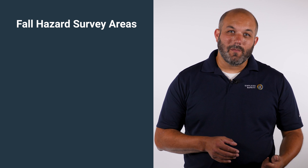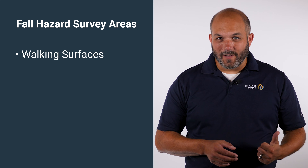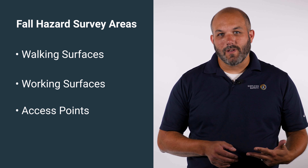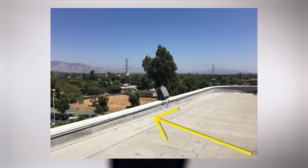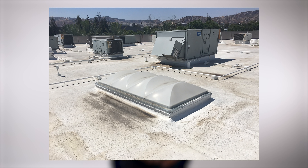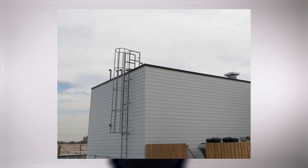So what type of information do we need to collect about rooftop fall hazards? When I perform a rooftop fall hazard survey, I'm focusing on three key areas: your walking surfaces, your working surfaces, and how you gain access to the roof. When it comes to the actual fall hazards, we want to focus on distance to your roof edge, any level changes, any skylights, any roof hatches, exterior ladders, or other access points.